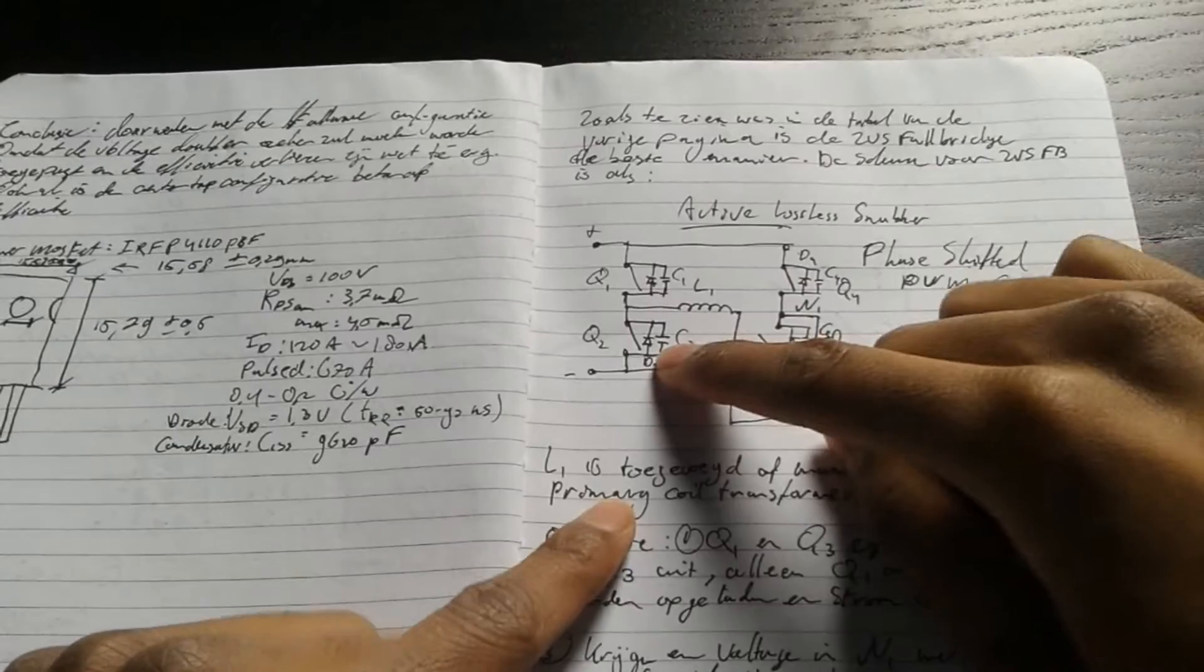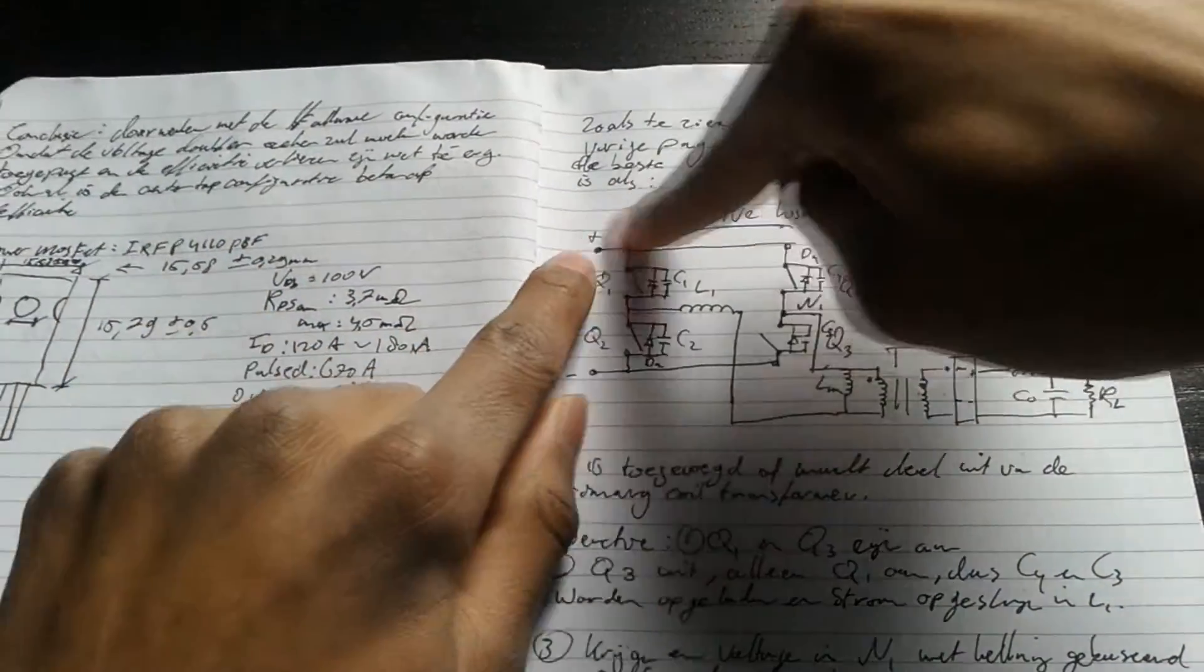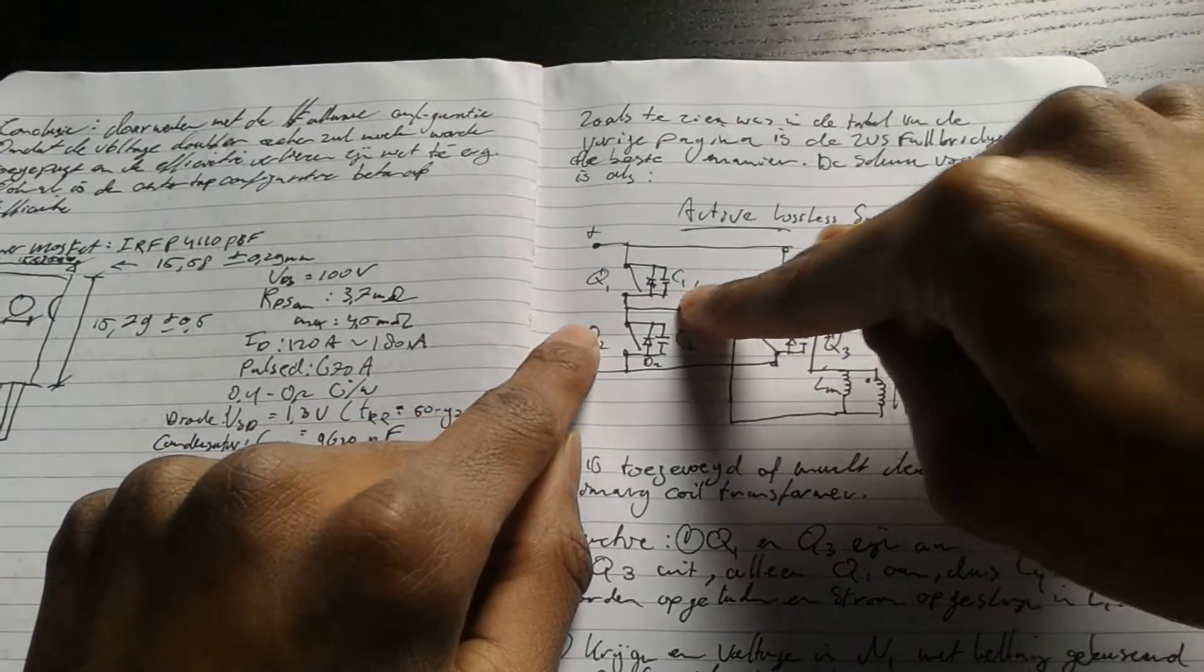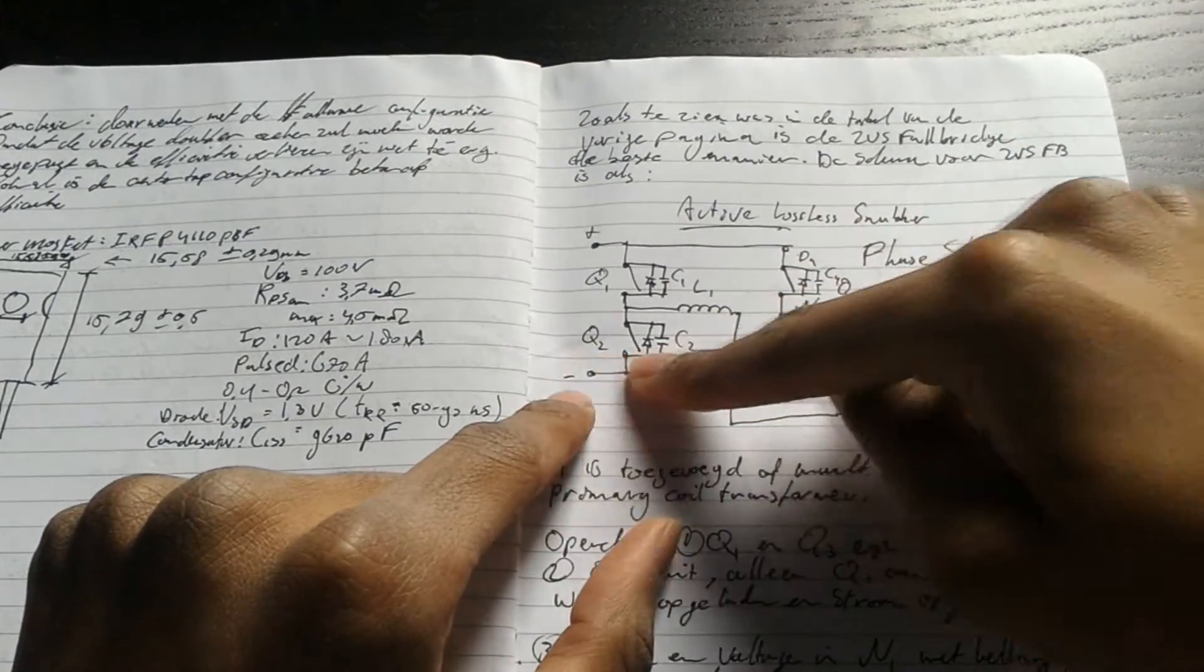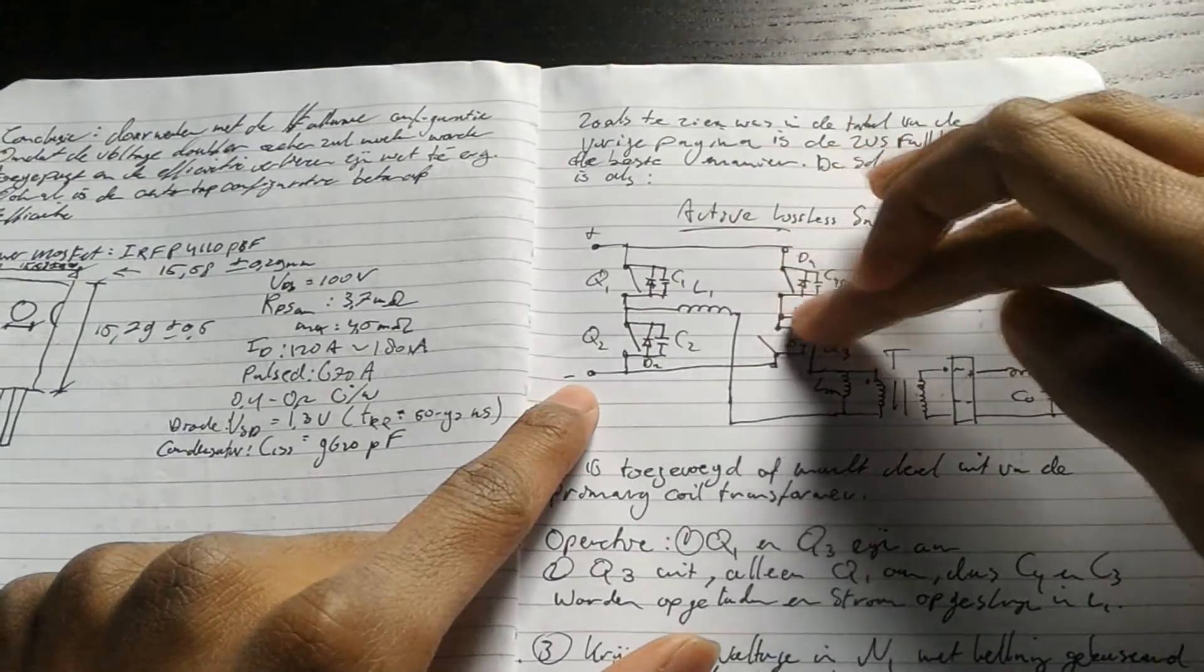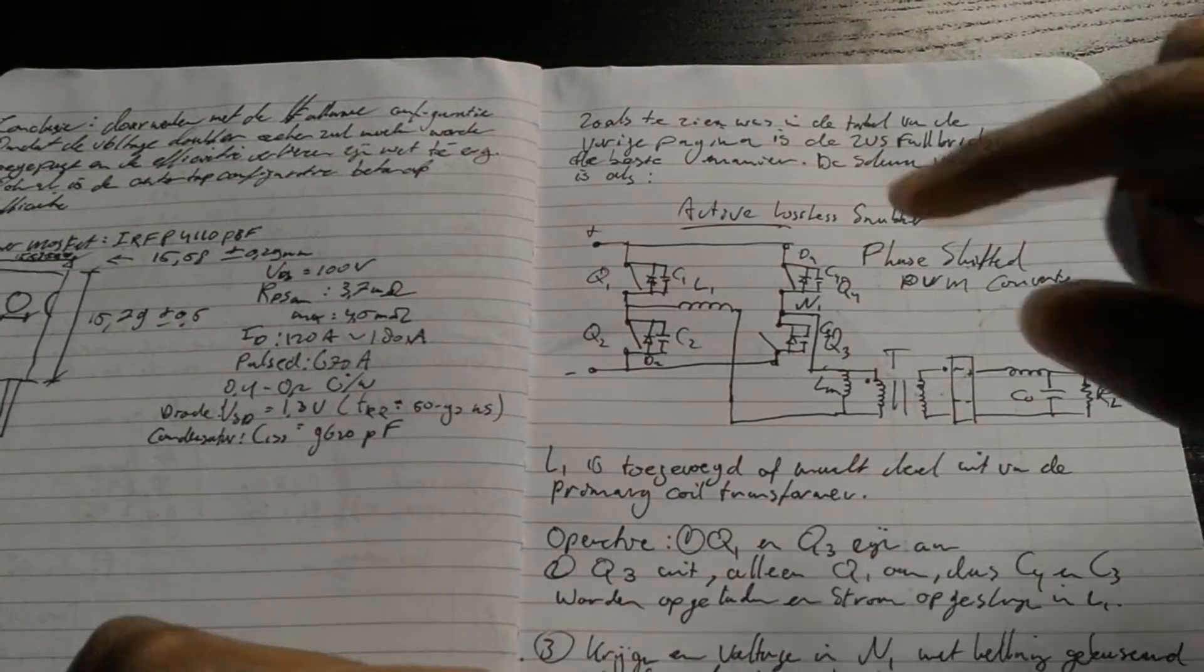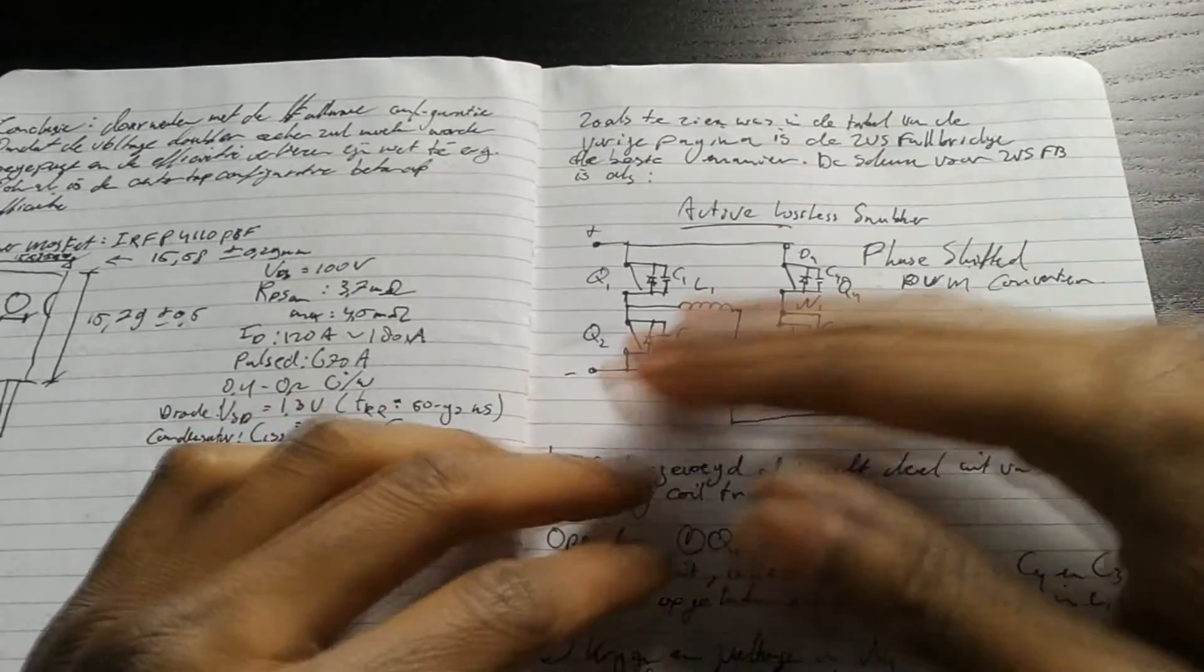Once Q2 is forward biased, we will turn on the switch, and current will flow from positive through Q4, through the transformer, through the resonant inductor, through Q2, to the negative side. So we will have another half cycle this way. That creates the second half cycle, and then we just start everything all over again.